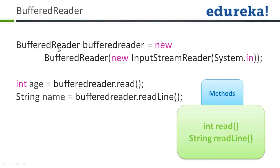To use BufferedReader, you create an object using the new operator: new BufferedReader, and within that you pass an InputStreamReader connected to System.in — whatever you press on the keyboard comes through InputStreamReader. If you want to take an integer value, write: int age = bufferedReader.read(). For a string, use String name = bufferedReader.readLine(), which fetches a string from the user.